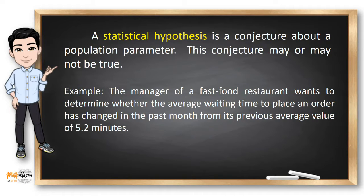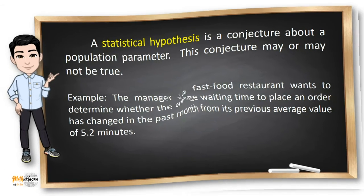For example, the manager of a fast food restaurant wants to determine whether the average waiting time to place an order has changed in the past month from its previous average value of 5.2 minutes. Our initial hypothesis in this example is that the average waiting time to place an order may be different from 5.2 minutes.